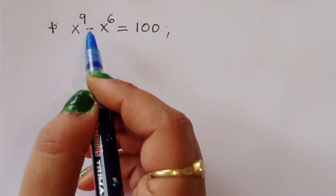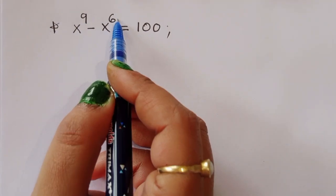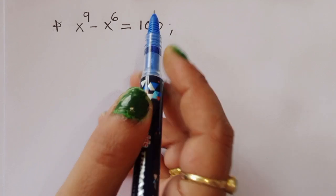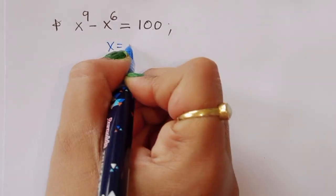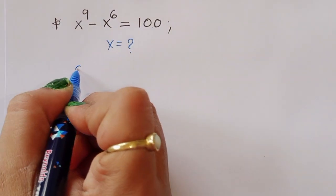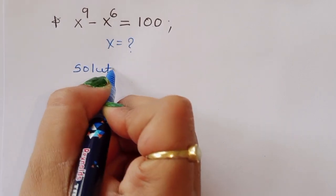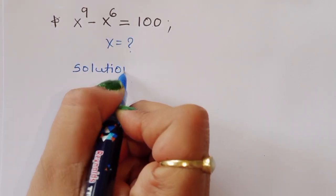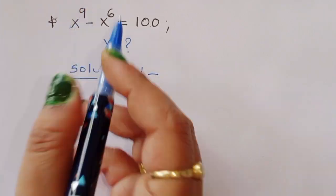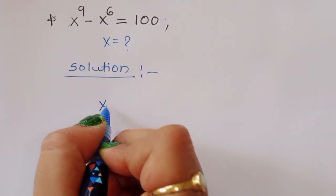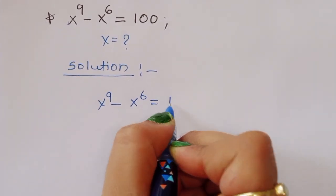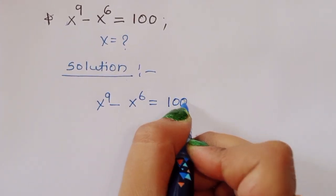The question is: given x power 9 minus x power 6 is equal to 100, we have to find out the value of x. x power 9 minus x power 6 is equal to 100.